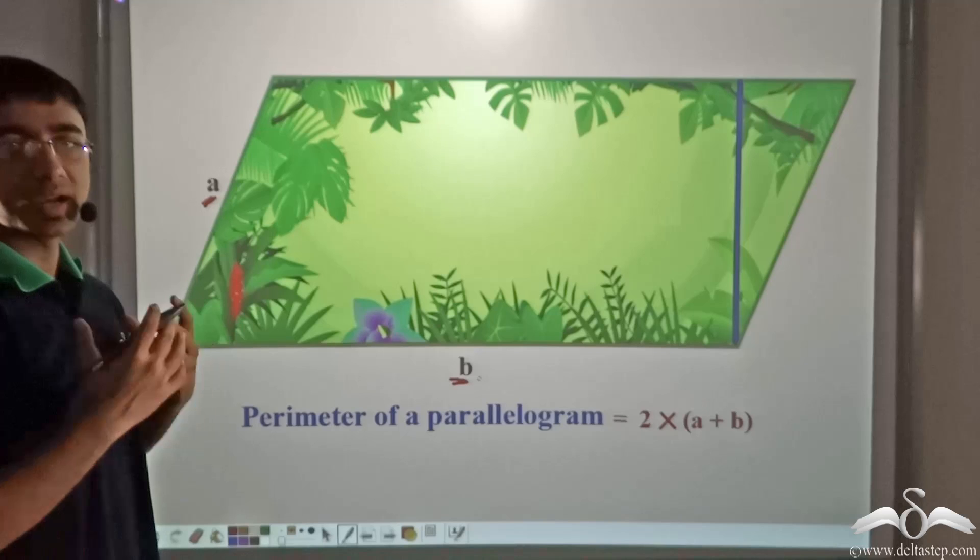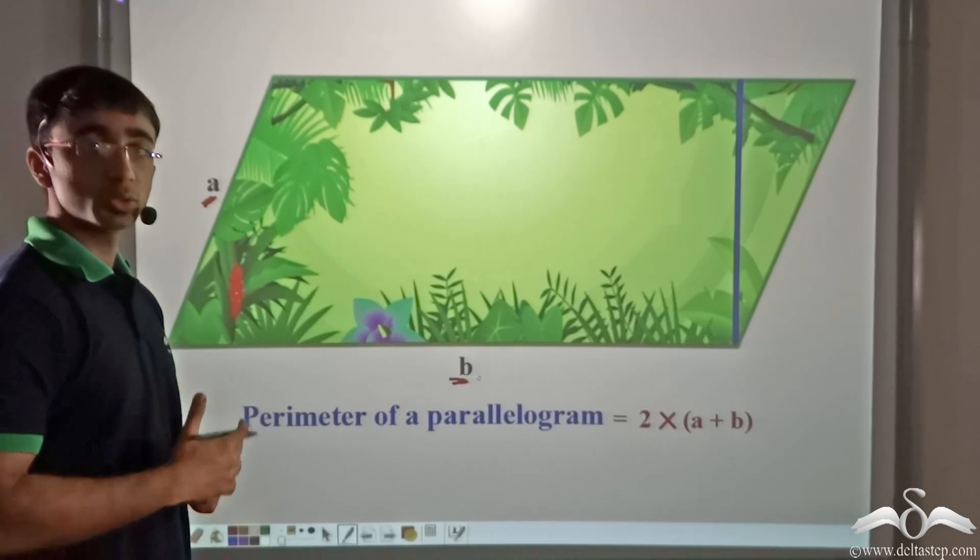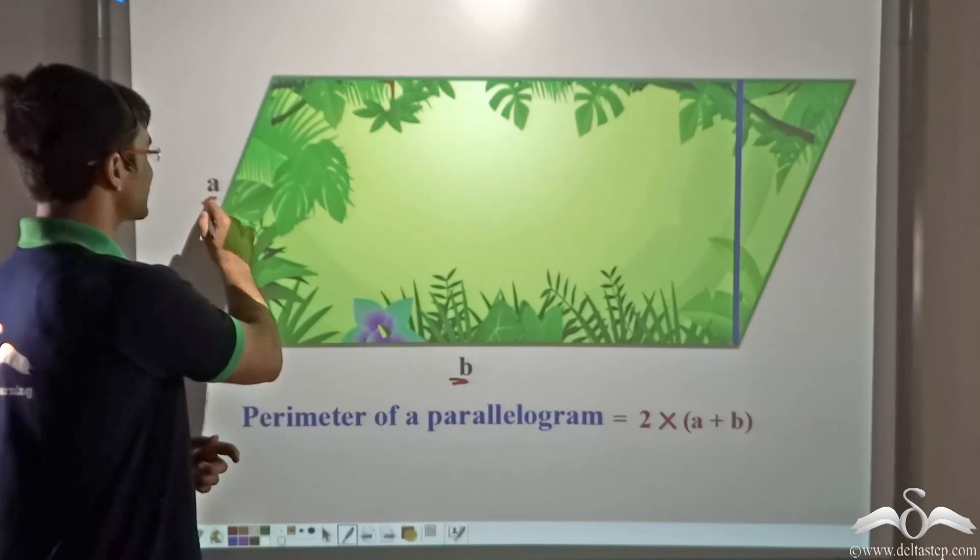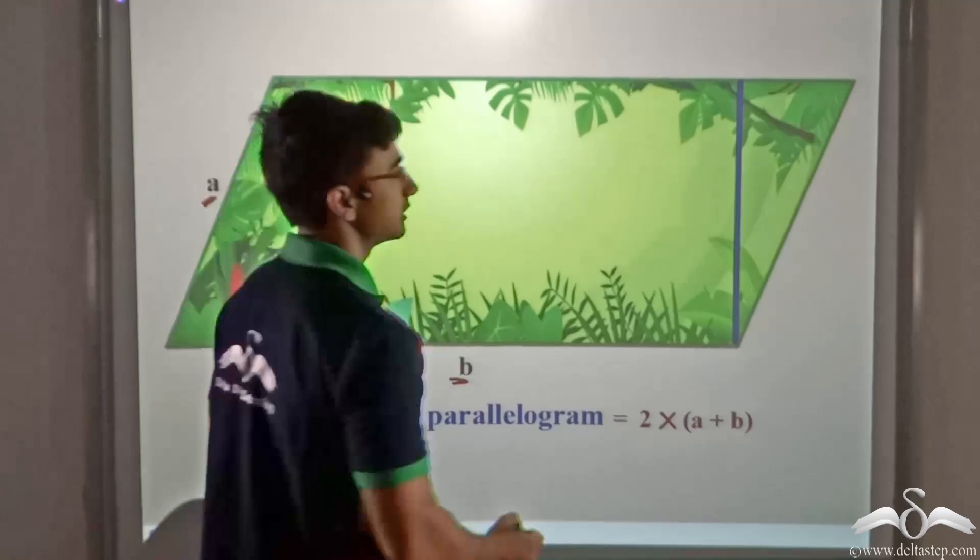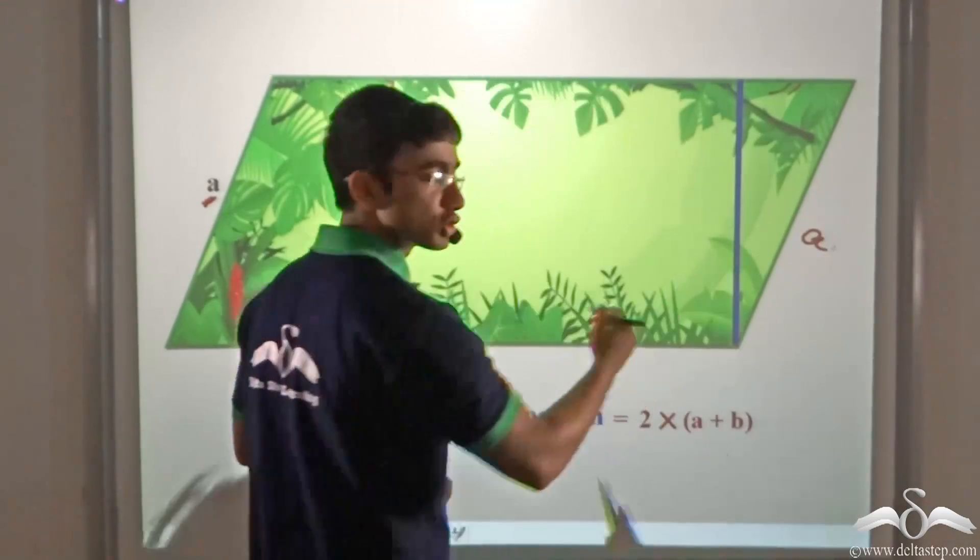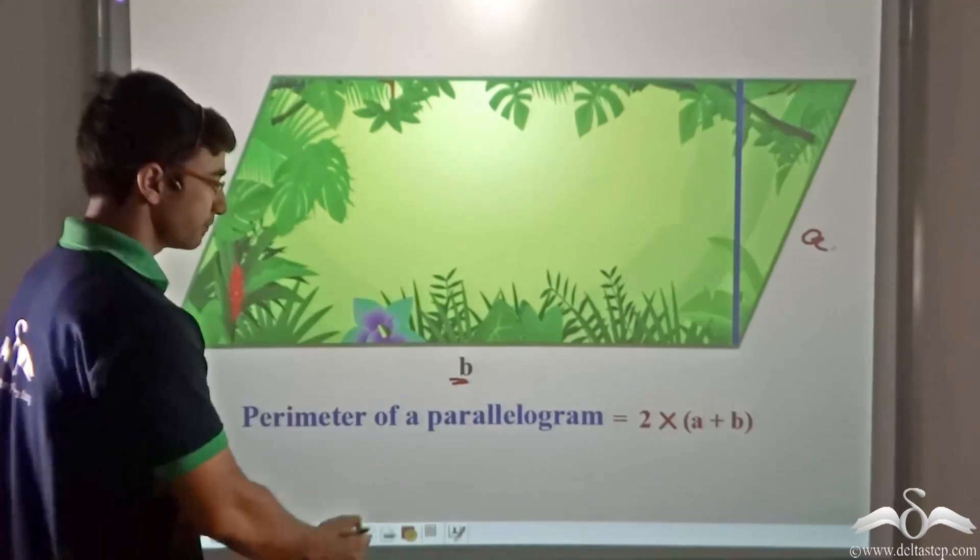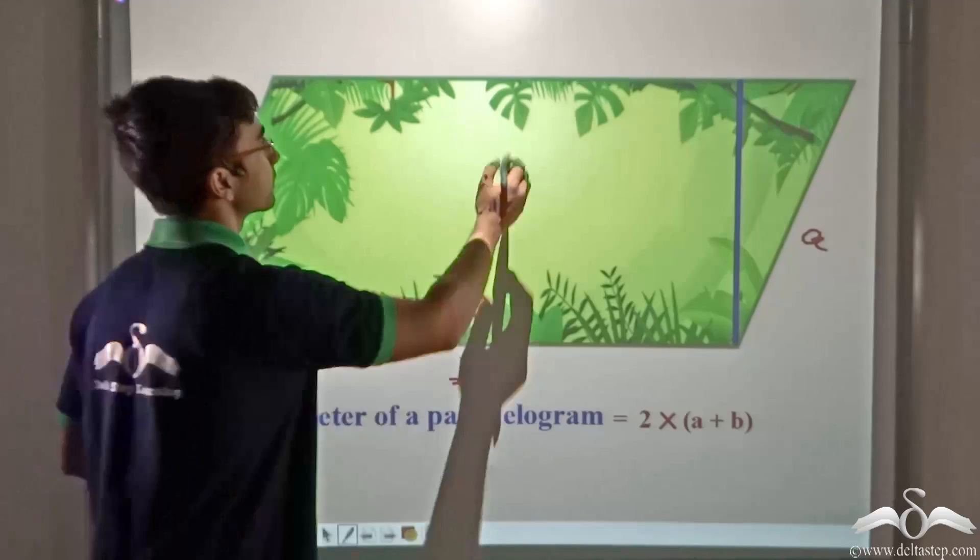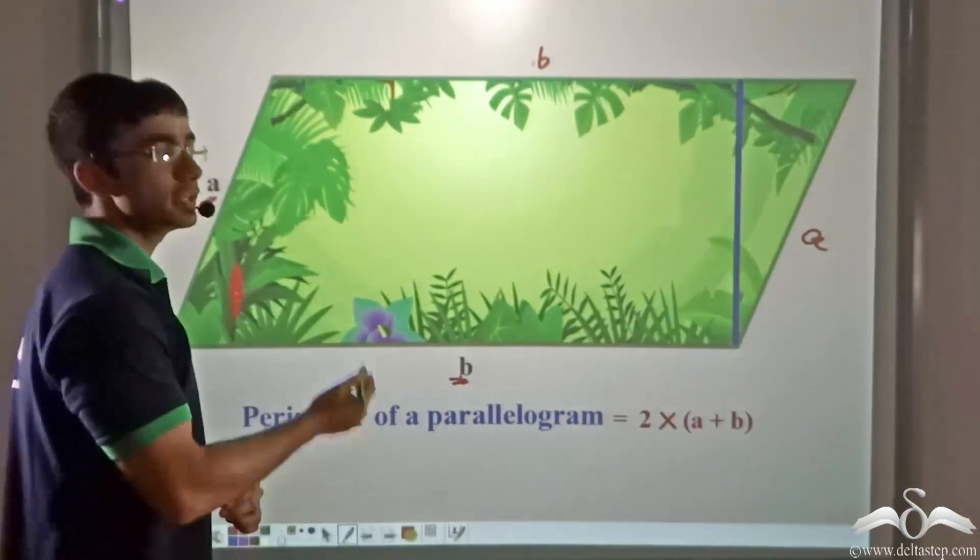Now we know that in a parallelogram opposite sides are always equal. So if this side is equal to A, then this side will also be A. Similarly if this side is B, this side will also be B.